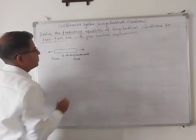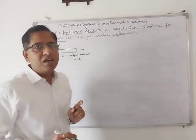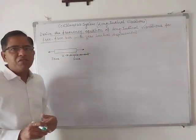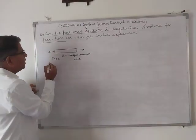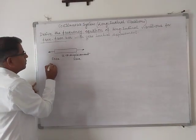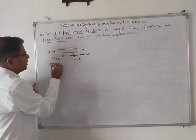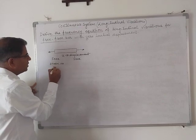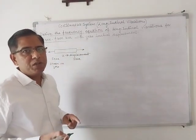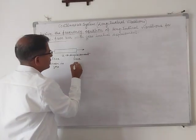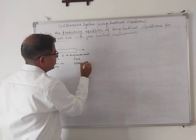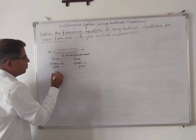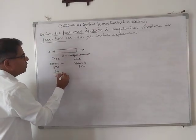The boundary conditions here are free-free: this end is free and this end is also free, so both ends are free with no initial displacement. At a free end, the strain is zero — that is, the rate of change of displacement with respect to distance is zero. So here also strain is zero, meaning du/dx = 0 at the free ends.